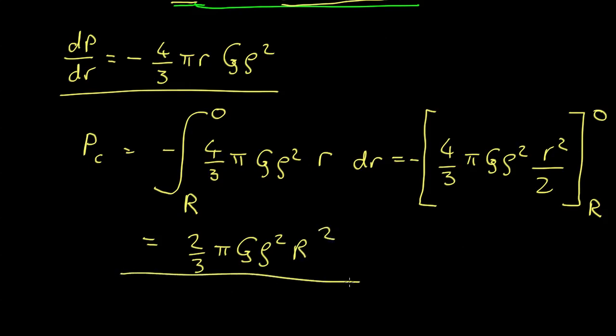So this is our equation for the pressure in the center of a star if that star has uniform density all the way through. Not very realistic, but it'll give us a good enough estimate for our current purposes.